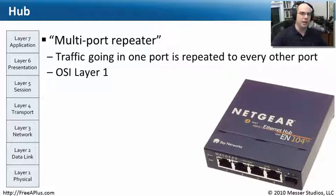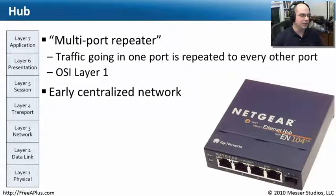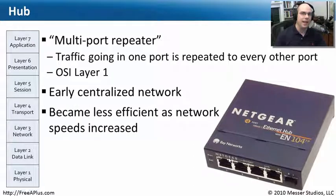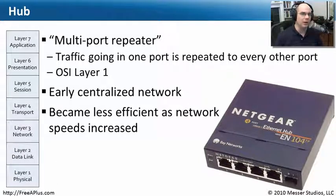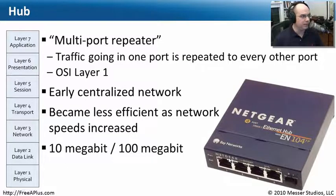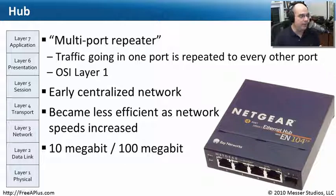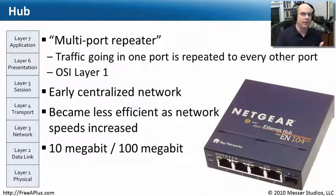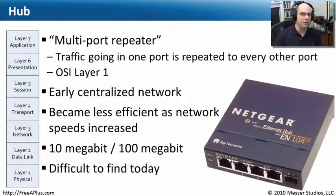These very large hubs created a lot of communication going back and forth — not really intelligent in how it works, but that's what we had when we started networking. It was centralized; we could connect everybody up to one device. But as speeds got faster, we realized that sending to every port created a lot of inefficiencies and speed really decreased. We really only saw hubs on 10-megabit-per-second and 100-megabit-per-second networks. Although there was a specification for gigabit hub-type communication, nobody ever created a gigabit hub — that's how inefficient it was.